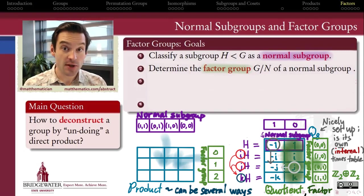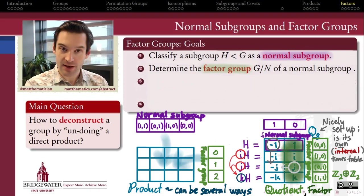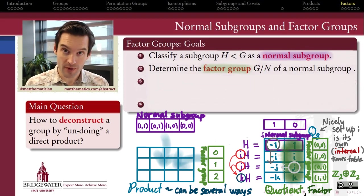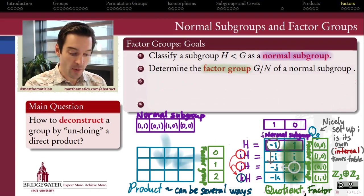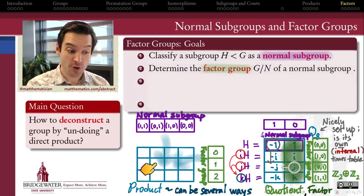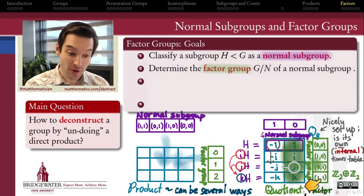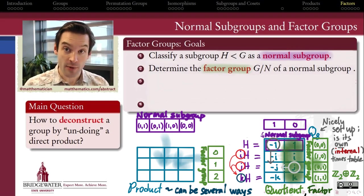The factor group associated with a normal subgroup N is called G mod N, and it consists of the cosets of that normal subgroup behaving as a group in their own right. Factor groups are going to be a way for us to solve the missing factor problem: if I want to understand a larger group as a product of a normal subgroup with something else, that factor group is going to be the something else in that equation. In this video we want to take a look at some of the elementary properties of factor groups that we can learn from these definitions.